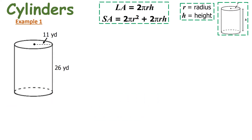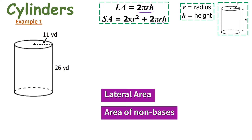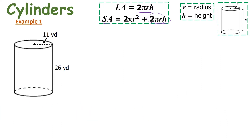For our first example we have a cylinder. The lateral area is 2πr times h. The lateral area is a portion of the surface area — think of it as the label around a canned good. It is the area that does not include the bases of the prism. I'll find the surface area, which includes the lateral area. The radius is 11 and the height is 26.